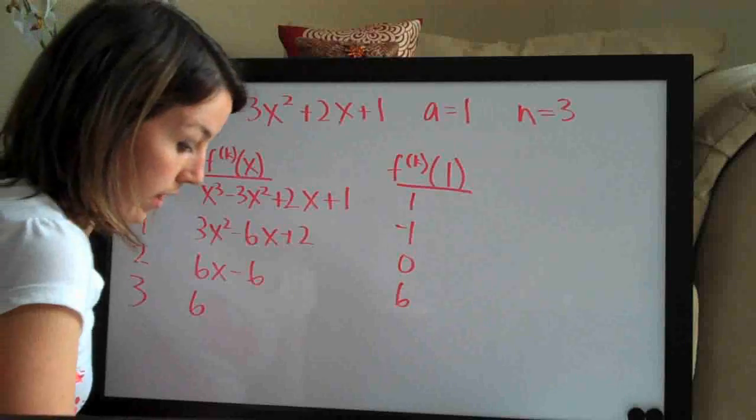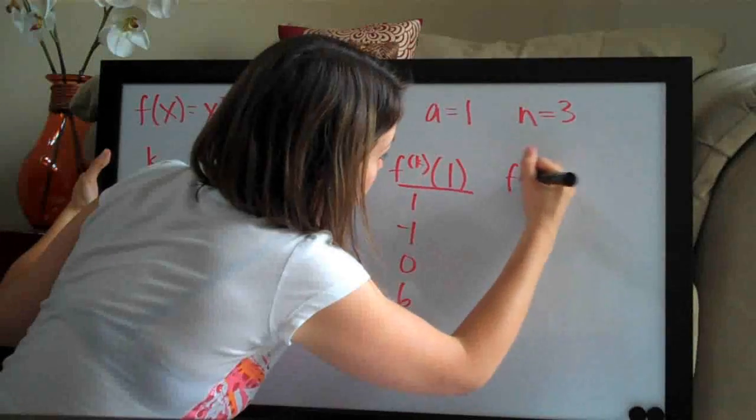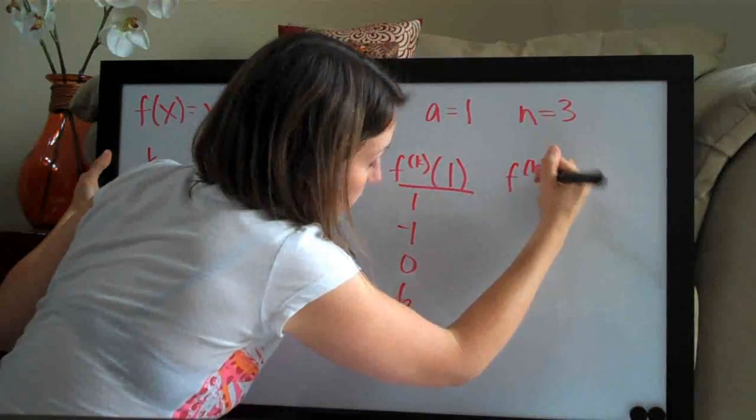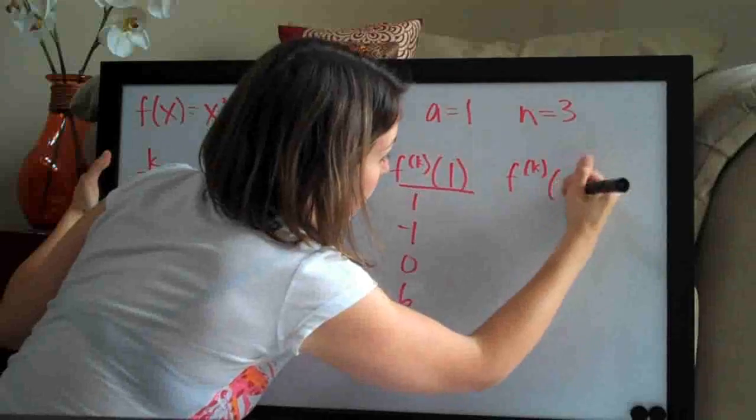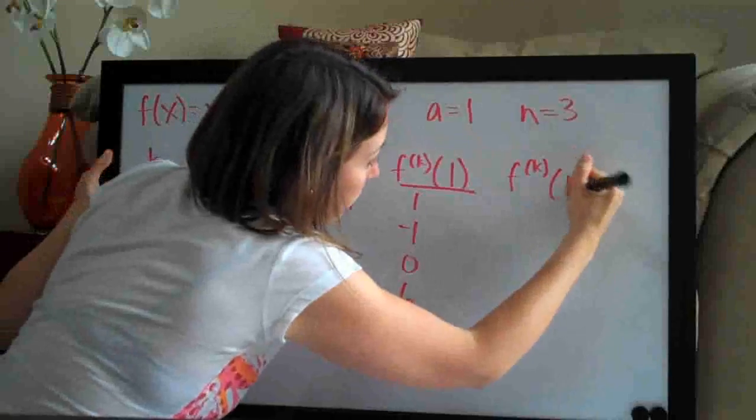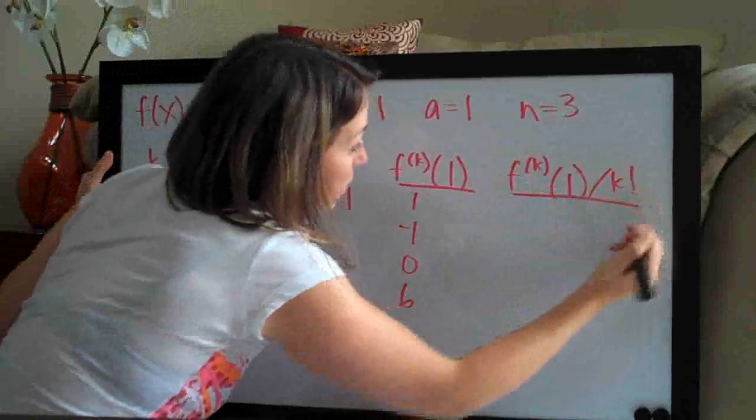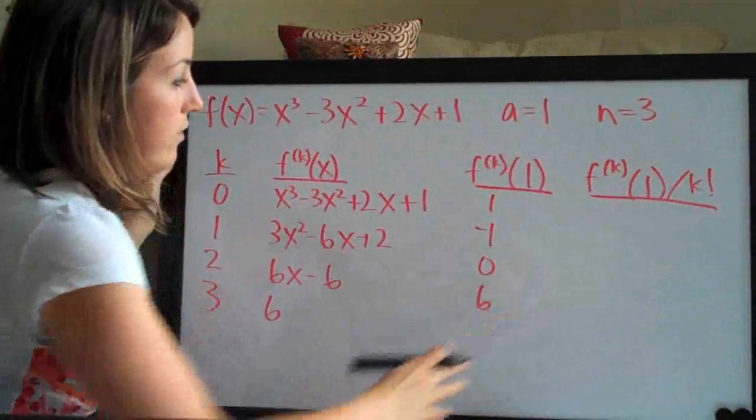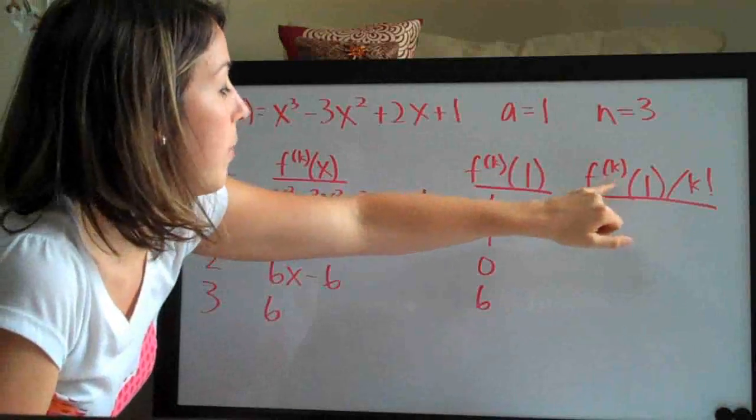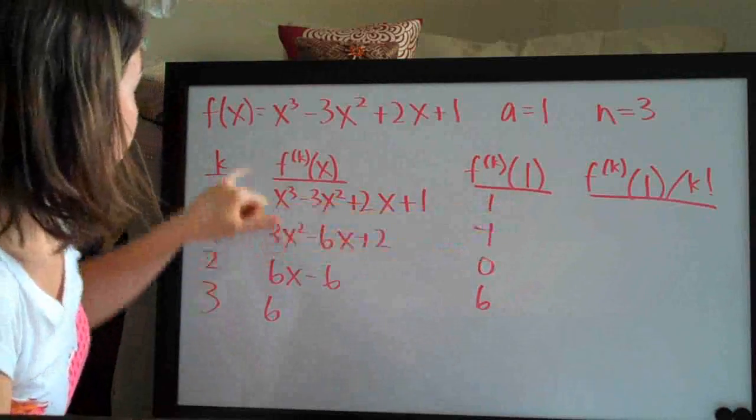And then the last, the fourth and final column is f_k of, normally it would be a but we can just go ahead and do 1 divided by k factorial. That exclamation point there is called factorial.